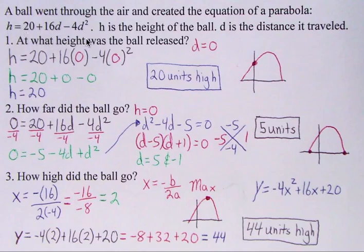So it says, what is the height? At what height was the ball released? So if you think about the parabola, remember this is the equation of the parabola. This is the distance the ball went and the height. So this is just a picture of the ball flying through the air. And it wants to know the height at which the ball was released. So if you think about, this is your Y-axis, this is your X-axis.